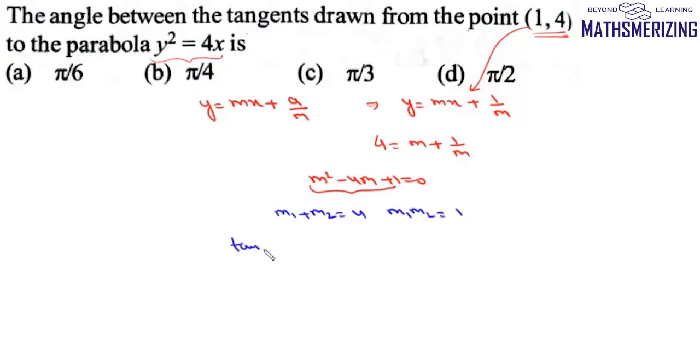Now we need to find angle between these two tangents. So angle between line is given by m2 minus m1 upon 1 plus m1 m2. So first we'll find m2 minus m1.